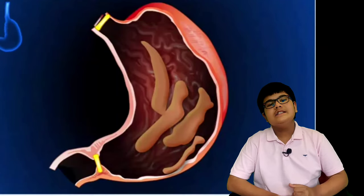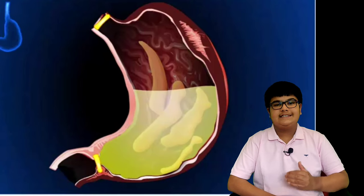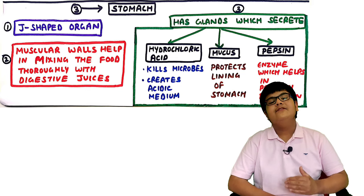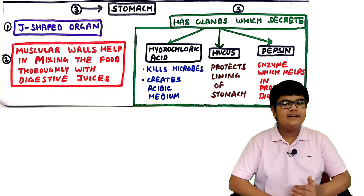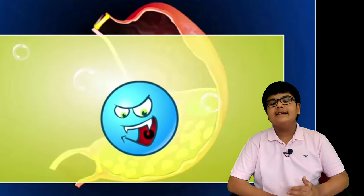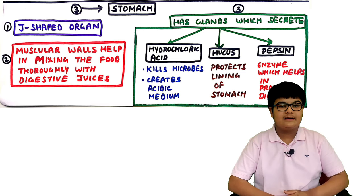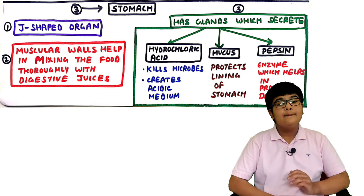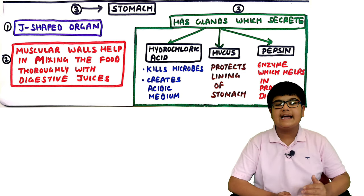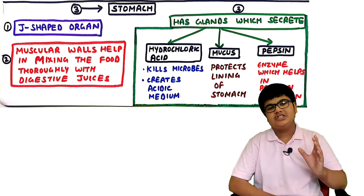The stomach has muscular walls which help mix food thoroughly with digestive juices. It also has glands which secrete hydrochloric acid, mucus, and pepsin. Hydrochloric acid kills microbes and creates an acidic medium. Mucus protects the stomach lining, while the enzyme pepsin helps in protein digestion.